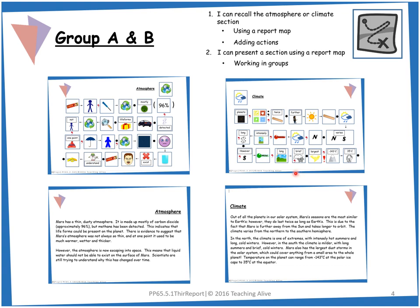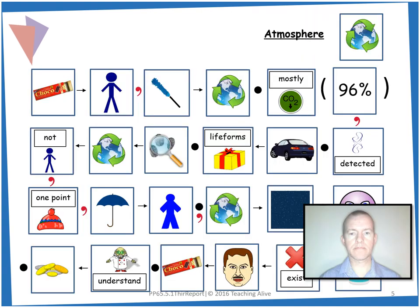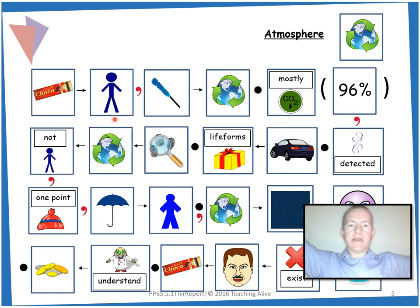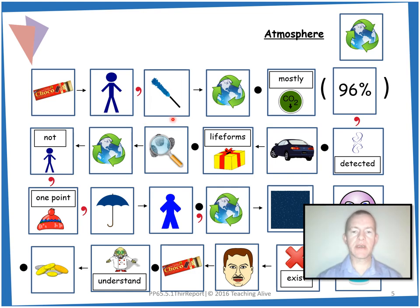Or continue to listen to this video and practise with me. Right, the atmosphere section — copy my actions or add your own as we go through. We'll start with the heading: atmosphere, so we can go round and round for atmosphere. Mars has a thin — we can pretend to be a thin stickman — and then there's a comma. We've got dusty, so you can pretend to dust. And atmosphere again — go round and round. And we've got a full stop.